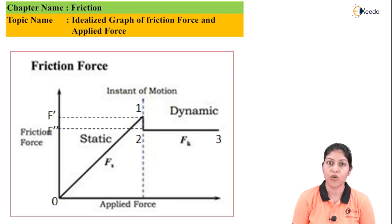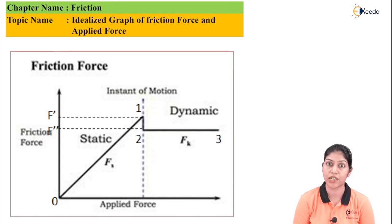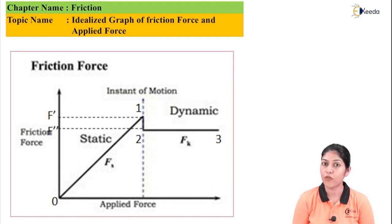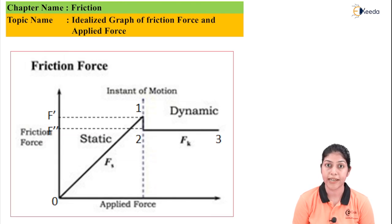Let's start the discussion over the idealized graph of friction force and applied force. As we discussed earlier about friction force and concepts related to friction force, the friction force is always opposite to the direction of motion or opposite to the direction of applied force. And when the force is continuously increasing, the value of friction force is also changing according to the variable value of forces. So how the value of friction force is changing when we change the value of applied force — this condition I am going to discuss with the help of one idealized graph.